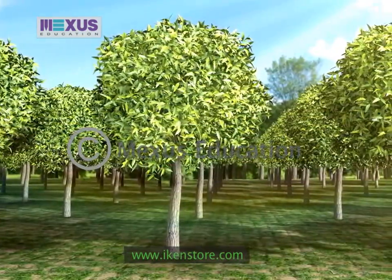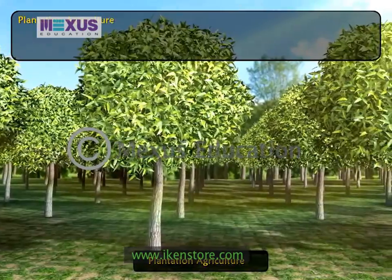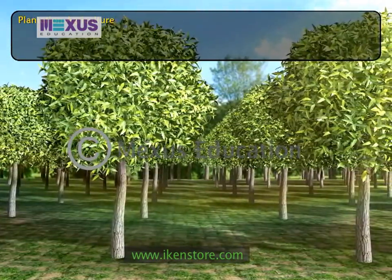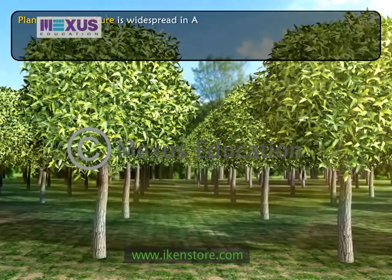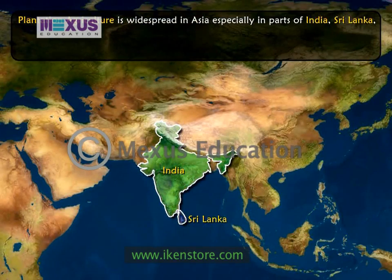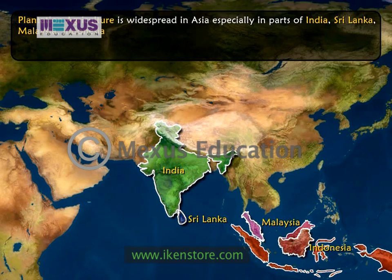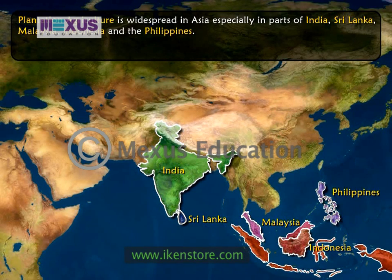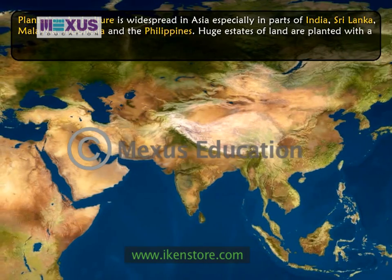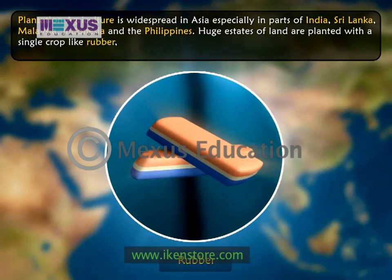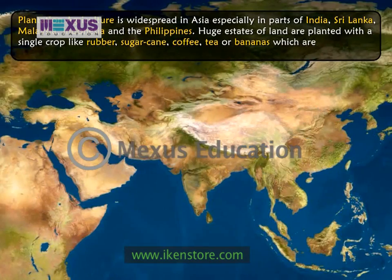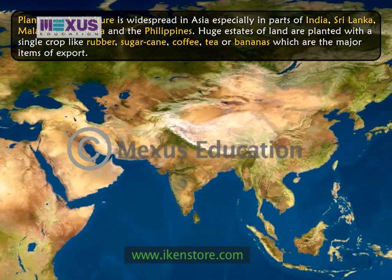The third type of agriculture is plantation agriculture. Begun by European colonial rulers, it is also widespread in Asia, especially in parts of India, Sri Lanka, Malaysia, Indonesia and the Philippines. Here, huge estates of land are planted with a single crop, like rubber, sugar cane, coffee, tea or bananas, which are major items of export.